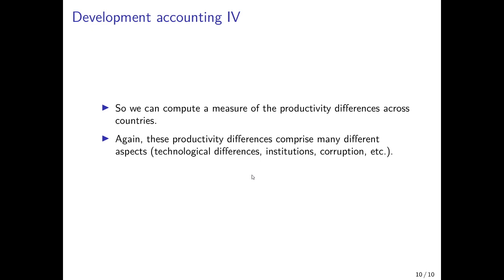If you do such an exercise, what you will typically find is that a large part of cross-country income differences can be explained by productivity differences. These productivity differences comprise many different aspects: they could reflect technological differences — where a new technology is only available in one country — but could also reflect differences in institutions, corruption, the number of holidays per year, and so on. So there are many factors that all map into such productivity differences across countries.